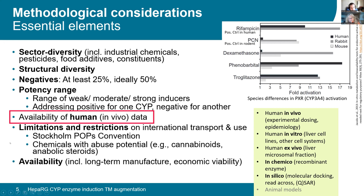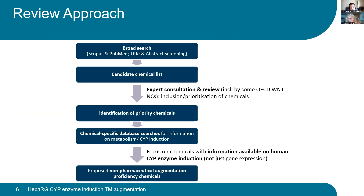Other considerations included limitations on international transport and use of certain chemicals — for example, those listed under the Stockholm POPs convention or chemicals with abuse potential were lower priority. Availability also informed prioritization, ensuring chemicals are long-term available and economically viable. The approach involved a broad literature database search using Scopus and PubMed, followed by title and abstract screening to identify candidate chemicals.